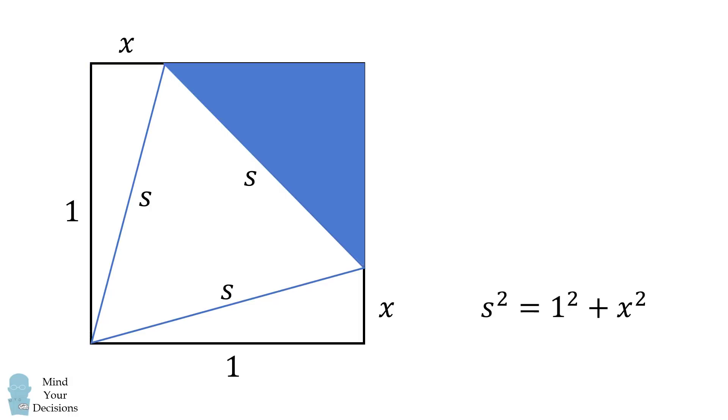Finally, we have one more triangle. It must have legs of 1 minus x, because the entire length of the square side is equal to 1.